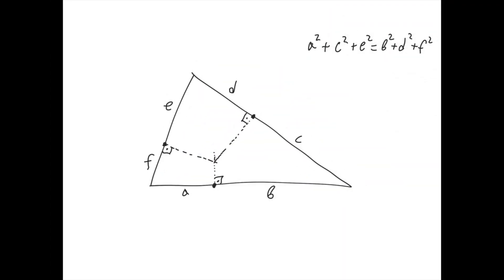Now let's prove the theorem in the other direction, where we have a triangle and three points, one on each side, such that a² + c² + e² = b² + d² + f², and we need to show the perpendiculars intersect at one point. We intersect two of the perpendiculars, and from their intersection point we drop a perpendicular to the third side. We now have two points on that side — one originally given and one constructed — and if we prove these two points coincide, we're done.